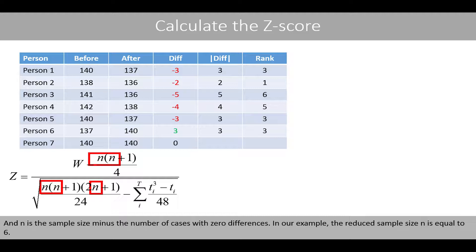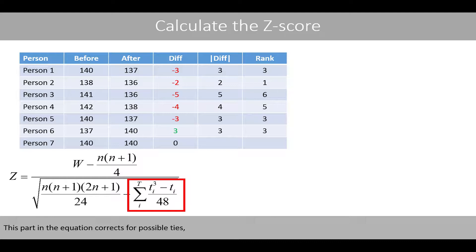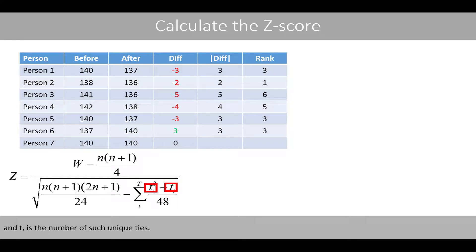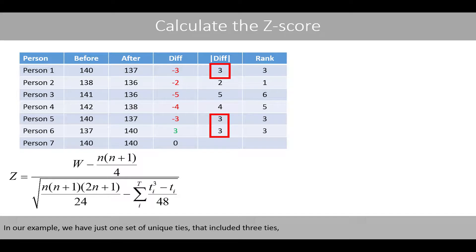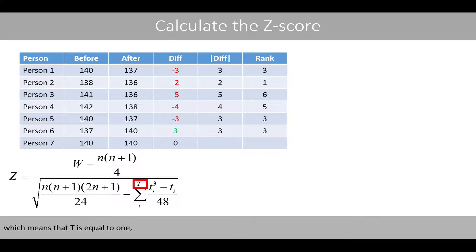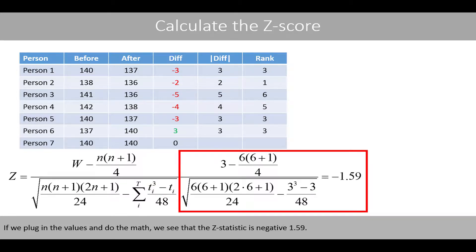In our example, the reduced sample size n is equal to 6. The correction term in the equation accounts for possible ties, where capital T represents the number of unique tie groups and little t is the number of observations in each unique tie group. We have one set of unique ties containing three observations, so capital T equals 1 and little t equals 3. Plugging in the values, the z-statistic is negative 1.59.